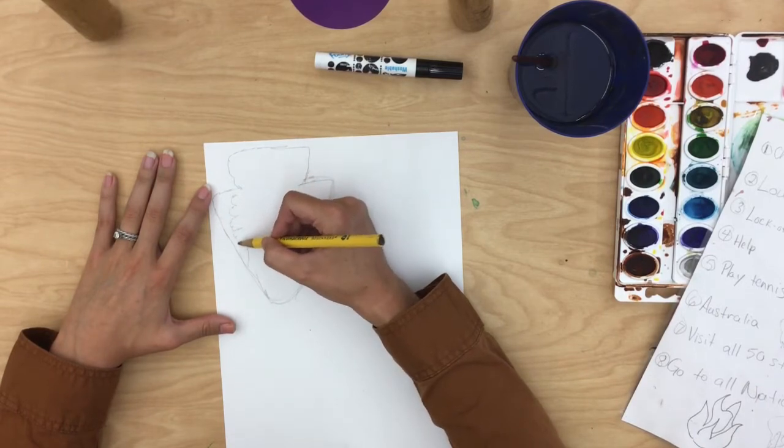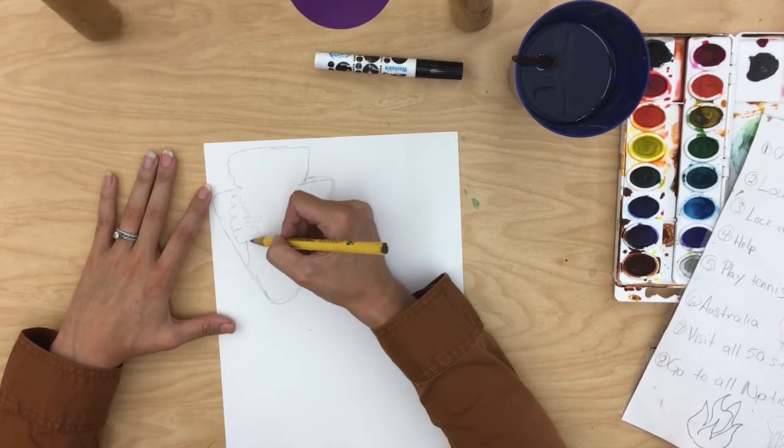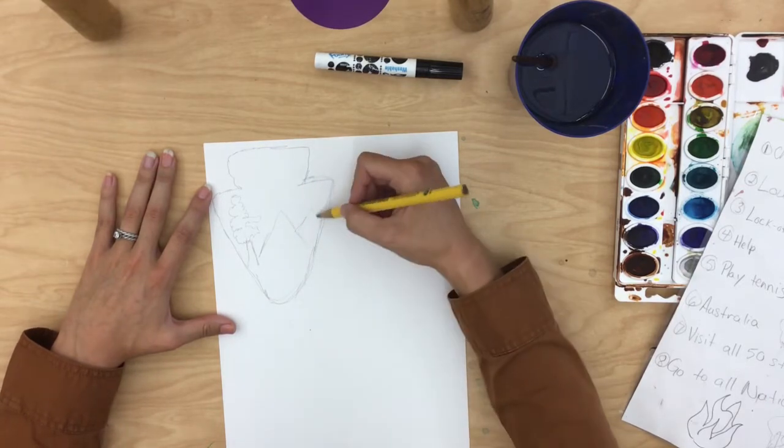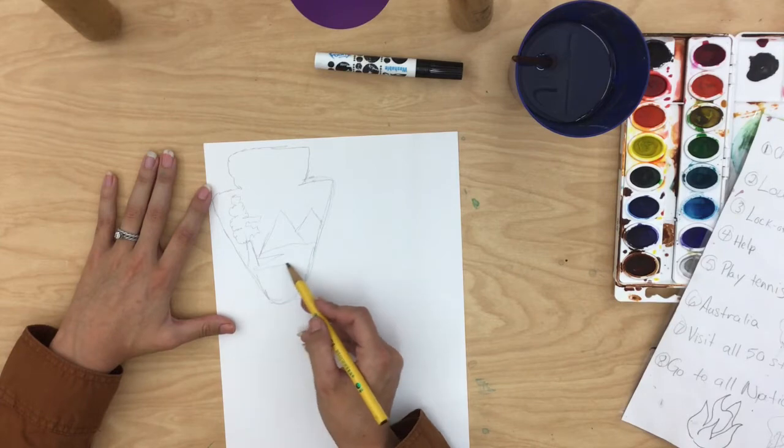Also, we're going to be painting these, so there's no need to scribble anything in with your pencil to color it black. You want to leave all parts of the paper white, just creating outlines for you to paint inside of later.